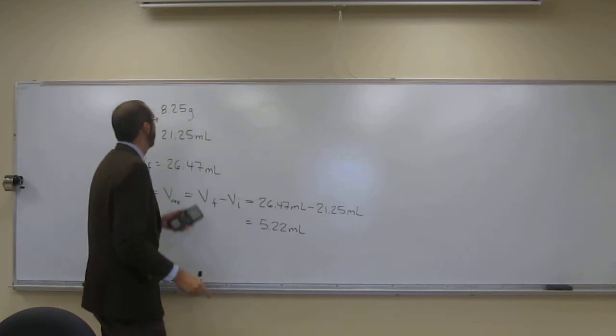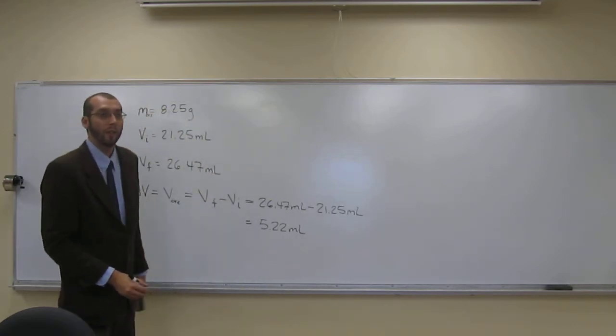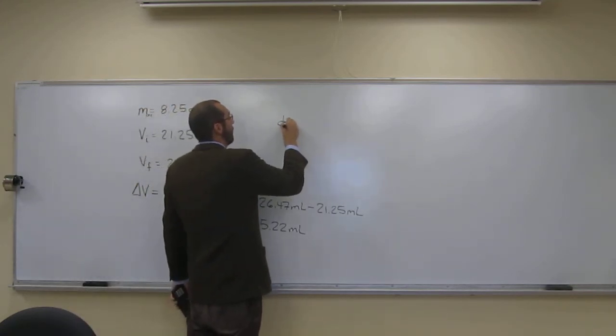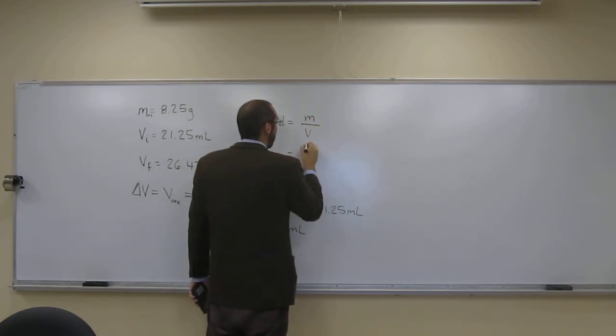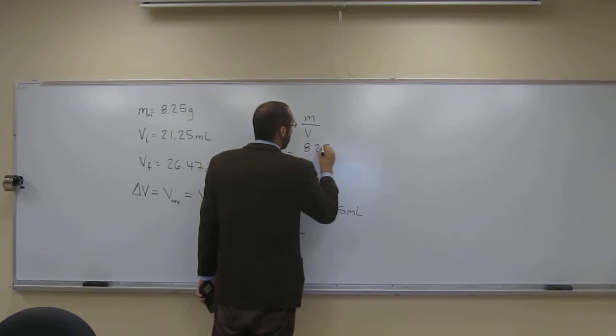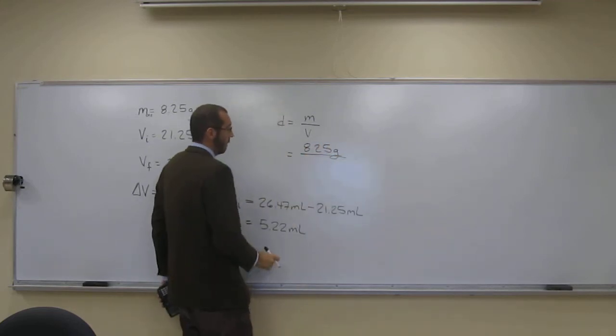So that's the volume of the object. That's the mass of the object. So density equals mass divided by volume. So the mass of the object is 8.25 grams divided by the volume of the object.